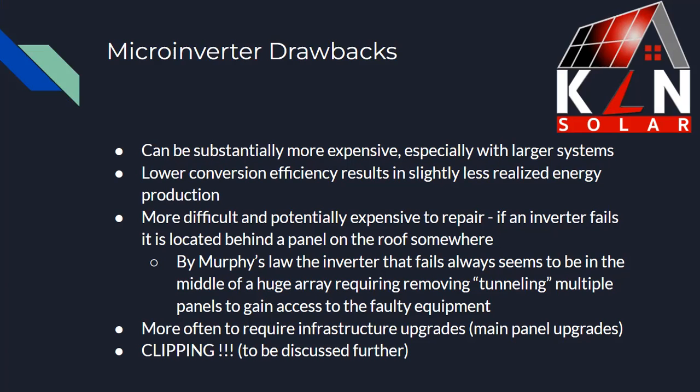Microinverters are more difficult and potentially expensive to repair if the inverter fails, because the inverter is located behind a panel on the roof. By Murphy's law, it never seems to be the panel on the outside of an array — usually it's one in the middle, three or four rows in on some huge array, and you'd have to remove panels to get to the one with the fault. Also, you're more likely to require infrastructure upgrades such as main panel upgrades. And microinverters are prone to something called clipping, which we'll talk about in a bit.